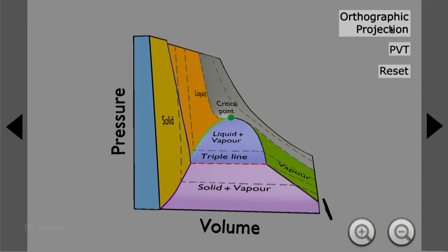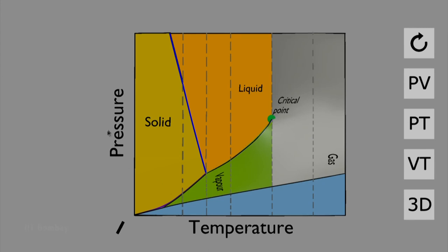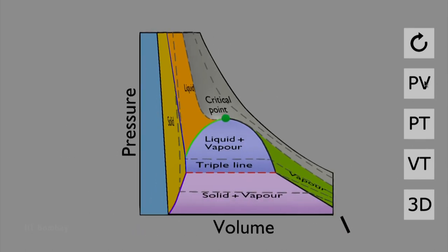Now let us go to the orthographic projection of this figure. What you see here is the P-T diagram, where we can see the existence of solid, liquid, and vapour coexisting together. This is the P-T diagram — solid, liquid, and vapour are coexisting and this is the triple point. Similarly, if I show you the P-V diagram, this is the P-V diagram and again you see the same thing which was shown earlier in three dimensions, but from this direction.